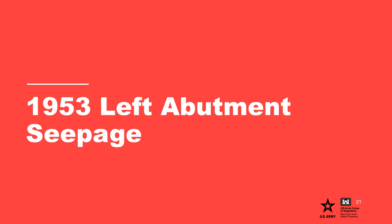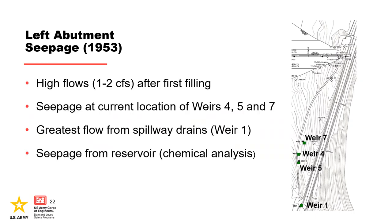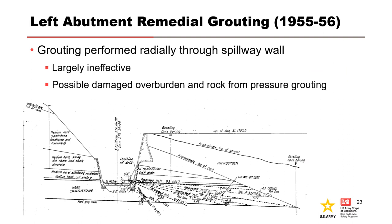The first seepage issue occurred at the dam in 1953 at the left abutment. After first filling, very high seepage flows were observed in the left abutment fractured bedrock near the spillway channel. Weirs were constructed to monitor flows ranging from 1 to 2 CFS, and chemical analysis confirmed the seepage was coming from the reservoir. A grouting program was performed a couple of years later using angled borings from the spillway to target the fractured rock zone, but it was determined to be largely ineffective and no other remediation was performed.